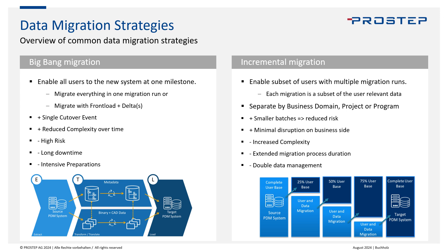With incremental migration, you slice the database into chunks separated by business domain, project, program, or other topics — discussed with the customer in the discovery workshop. These smaller batches are migrated one after another as users are ready for the new system. Smaller batches reduce risk and minimize business disruption since runtime is lower. You can size batches to fit within a single weekend, for example. However, this increases complexity because data can be owned by either the source or target system, requiring clear communication to users about where data currently resides — referred to as double data management.